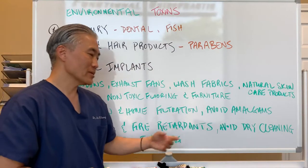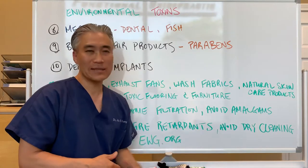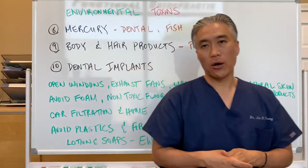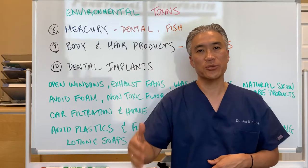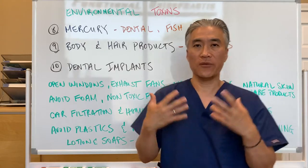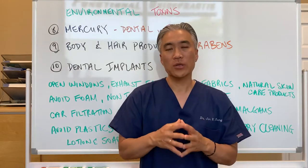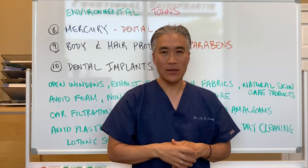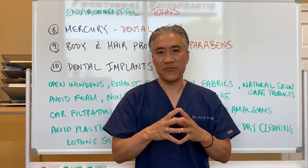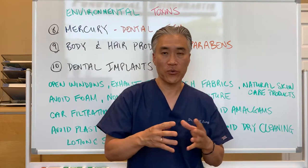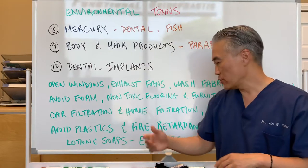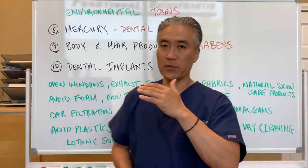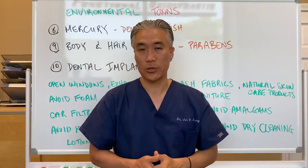Avoid fire retardants wherever possible. Avoid dry cleaning whenever possible. For lotions and soaps, there is a website called EWG — Environmental Working Group, ewg.org. Take the different types of products that you use, go to this website, and plug them into their search engine. It will give you a rating of the carcinogenic effects of these products that you use on your skin and hair, so make sure you have a low cancer risk rating for the products you are currently using.